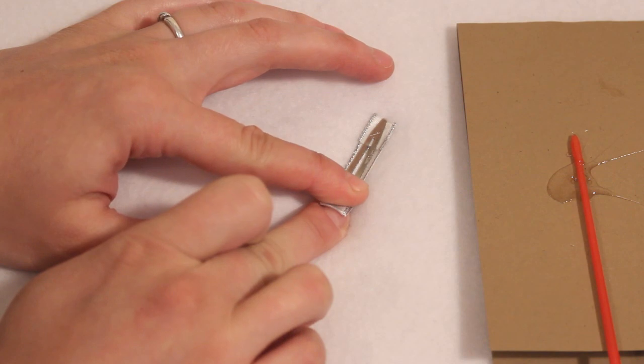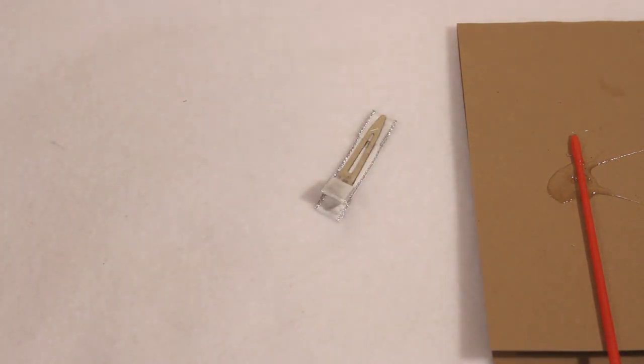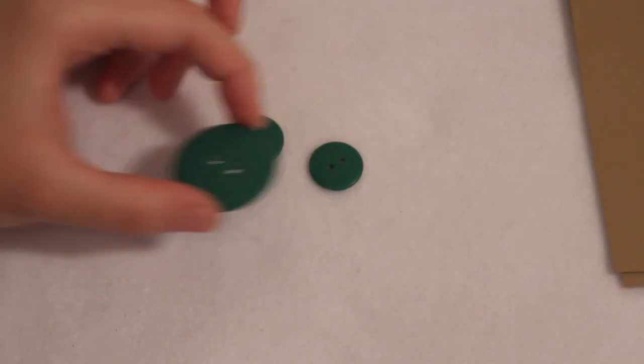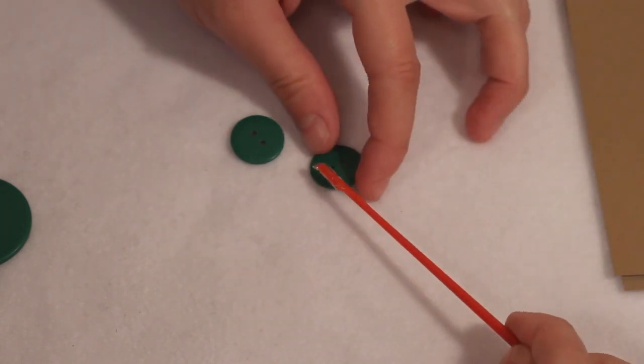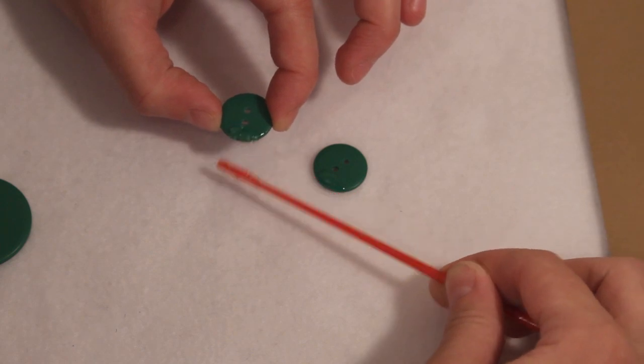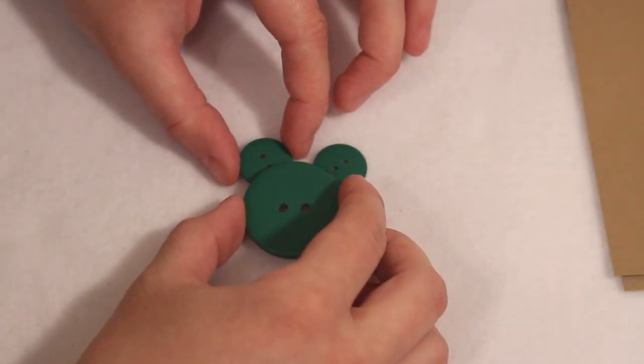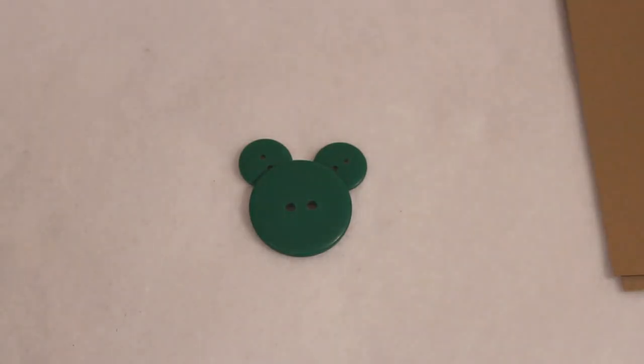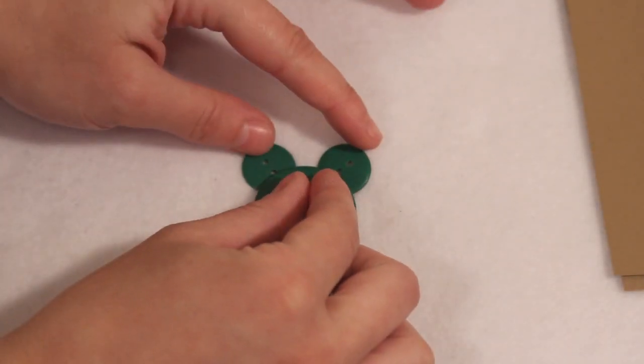Set that aside to dry and we will start on our Mickey face. Stack your buttons as shown, then remove the largest and apply glue to the two buttons remaining. Set the large button back into place and slide a spare button underneath so it keeps the large button level while it dries.